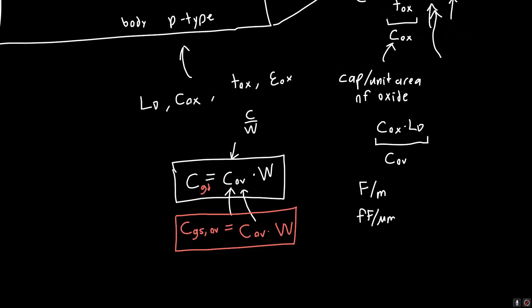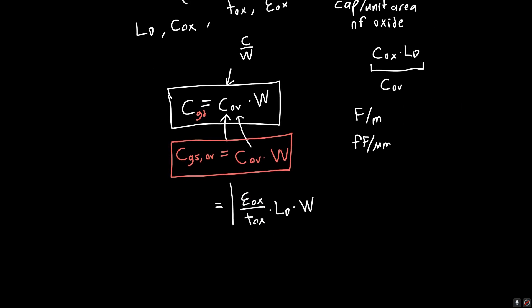And again, the reason we have it in this somewhat awkward form, I'll write it out in its entirety, it's the permittivity of the oxide divided by the thickness of the oxide times this overlap length times the width. This is the complete form. You just probably won't see it in this form much because LD can be hard to measure and hard to predict. Whereas this COV, this is more measurable because we can adjust the width of any given transistor and then measure the capacitance.